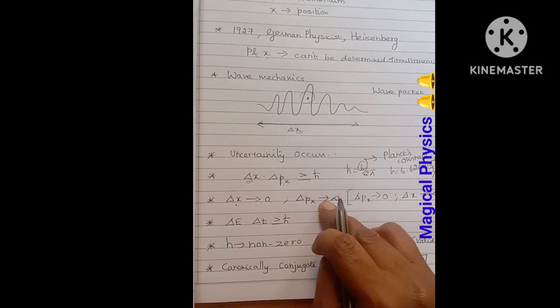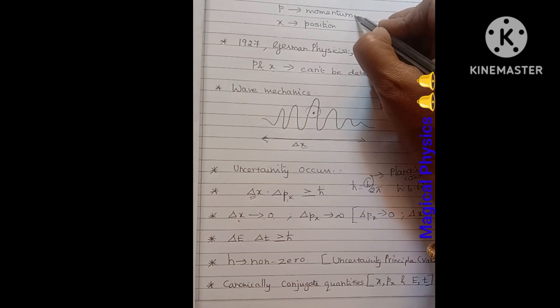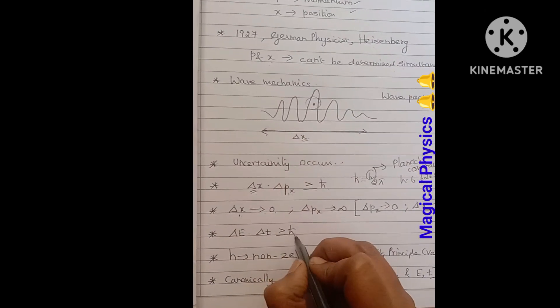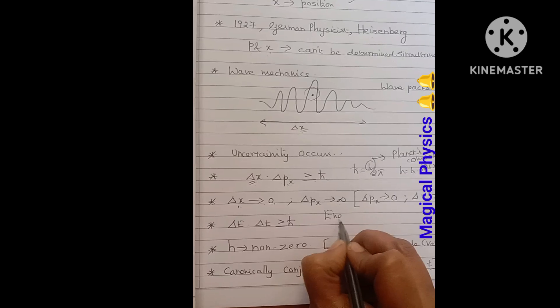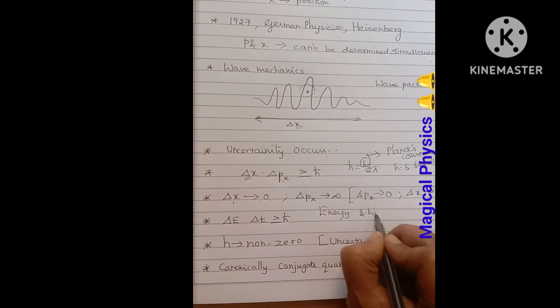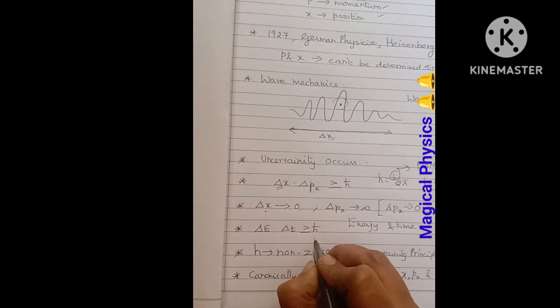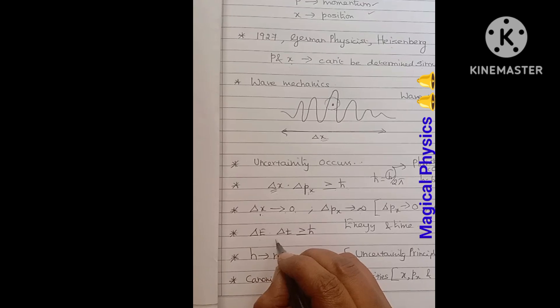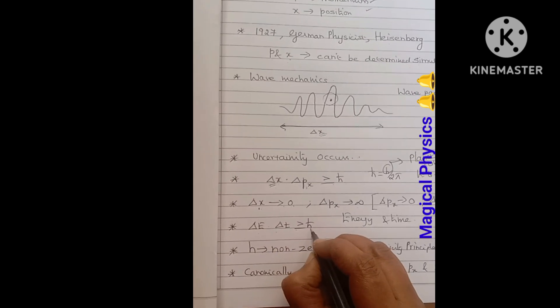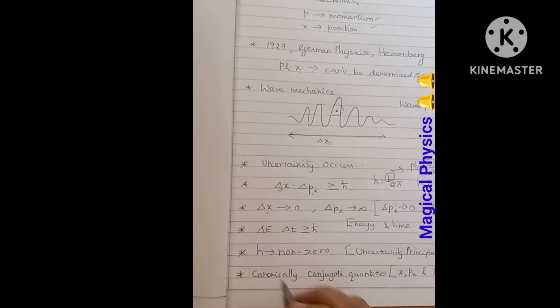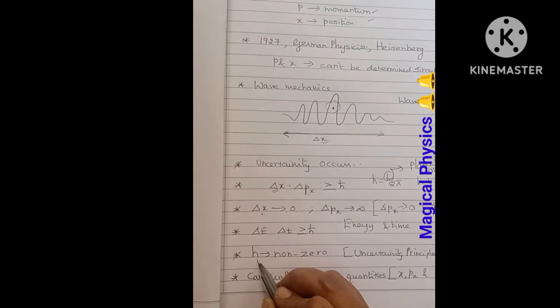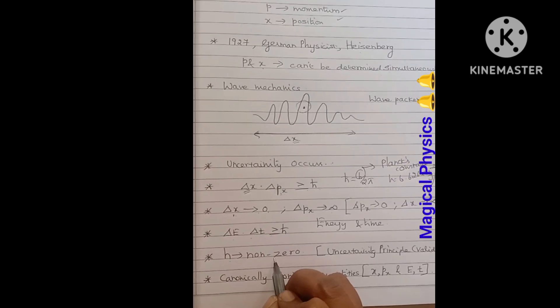Likewise, we can also write for energy and time. The expression can be written as ΔE × Δt ≥ h-cross, that is h by 2π. We already know that this Planck's constant is a non-zero term.